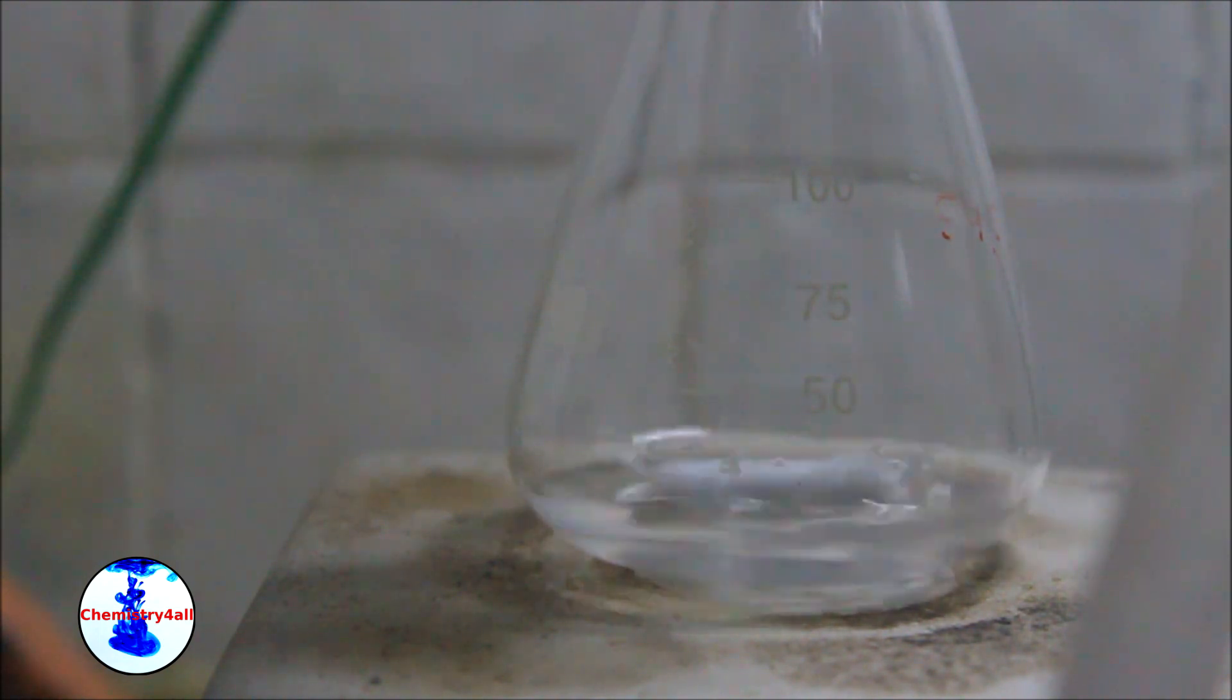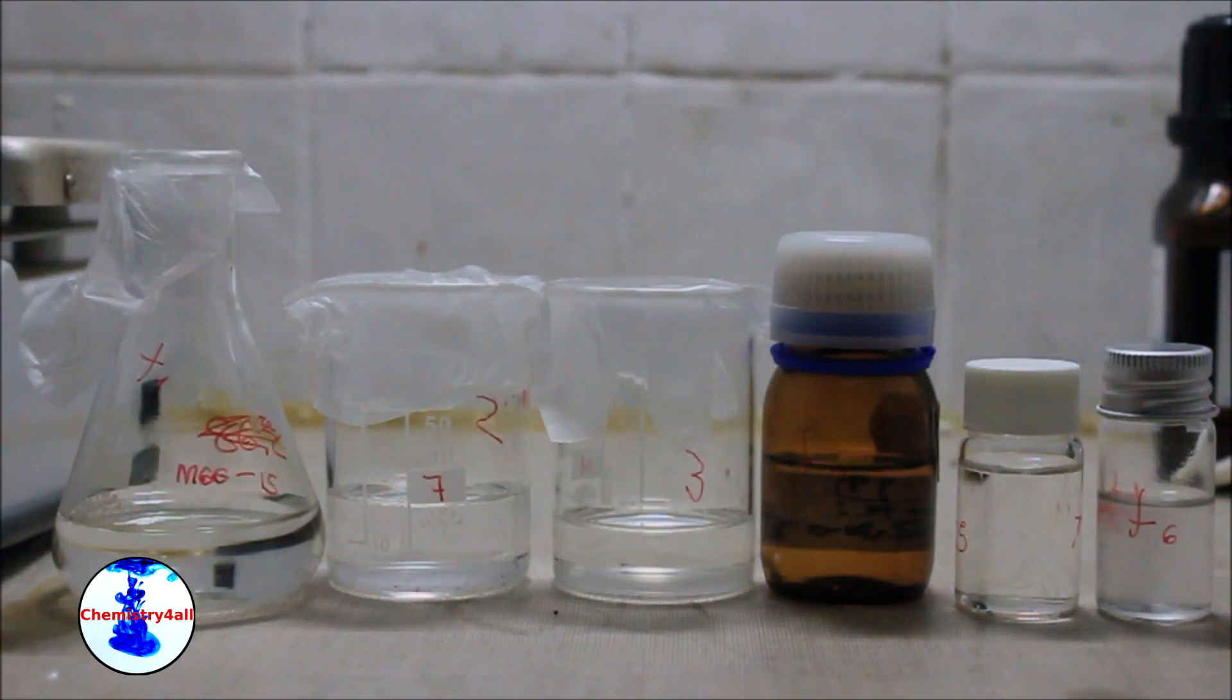When only about 10 to 20 ml of solution are left in the flask, the distillation can be considered to be finished. At the end I've collected a total of 6 fractions, with boiling points ranging from 67 to 70 degrees.